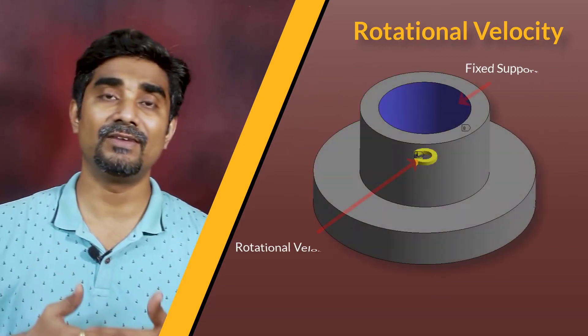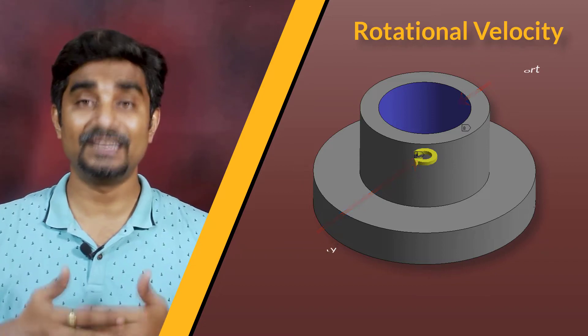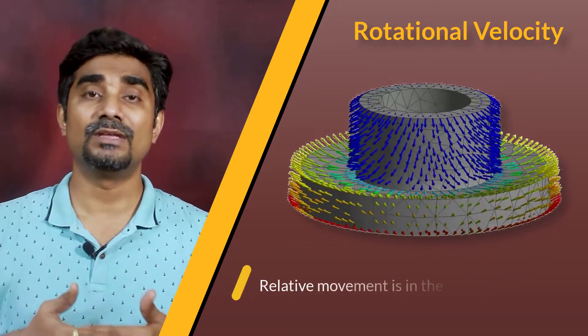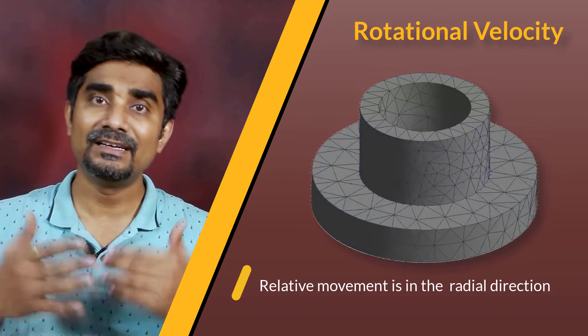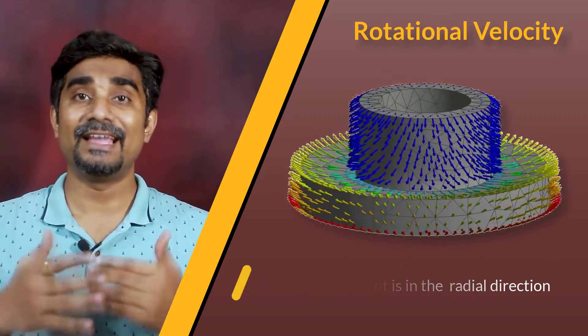For rotational velocity, the forces are generated along the radial direction. So, the relative movement is in the radial direction for an axis-symmetric structure.